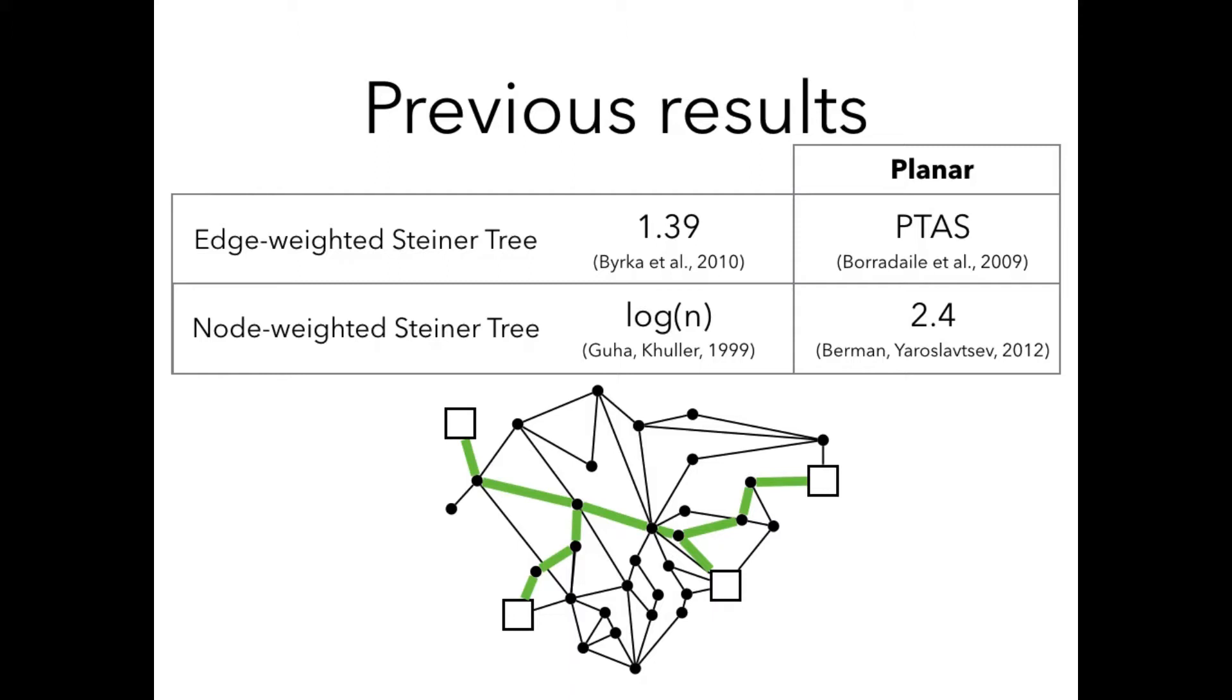We can consider also the Steiner tree problem on planar graphs. For edge-weighted Steiner tree on planar graphs there is a PTAS, which is basically a family of approximation algorithms that allow for approximation arbitrarily close to 1. For node-weighted Steiner tree problem the best-known approximation algorithm for planar graphs is 2.4 approximation. The main open problem in this area is whether there is a PTAS for planar node-weighted Steiner tree problem. This is the problem that we tried to solve.